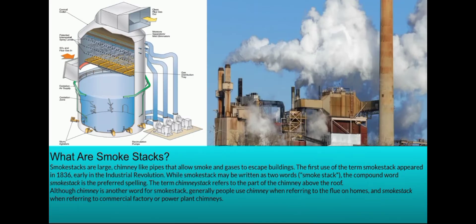Another example of an abatement measure is the smokestack. Smokestacks are large chimney-like pipes that allow smoke and gases to escape buildings. The first use of the term smokestack appeared in 1836 during the early Industrial Revolution. The compound word 'smokestack' is the preferred spelling, and the term 'chimney-stack' can also be used — referring to the part of the chimney above the roof. It is generally used when referring to flues on homes, and 'smokestacks' when referring to commercial factory or power plant chimneys.